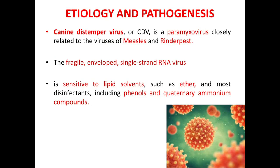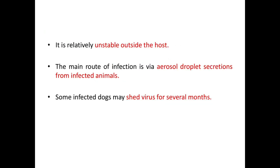Canine distemper is caused by a paramyxovirus closely related to measles and rinderpest virus. It is a fragile, enveloped, single-stranded RNA virus. This virus is sensitive to lipid solvents such as ether and most disinfectants including phenols and quaternary ammonium compounds, and is relatively unstable outside the host.